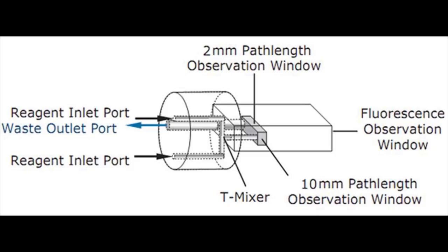The SX20 allows the use of both a 2mm and a 10mm path length. The path length is selected according to the position of the light guide and the absorbance detector on the cell block. Consult the manual for details.